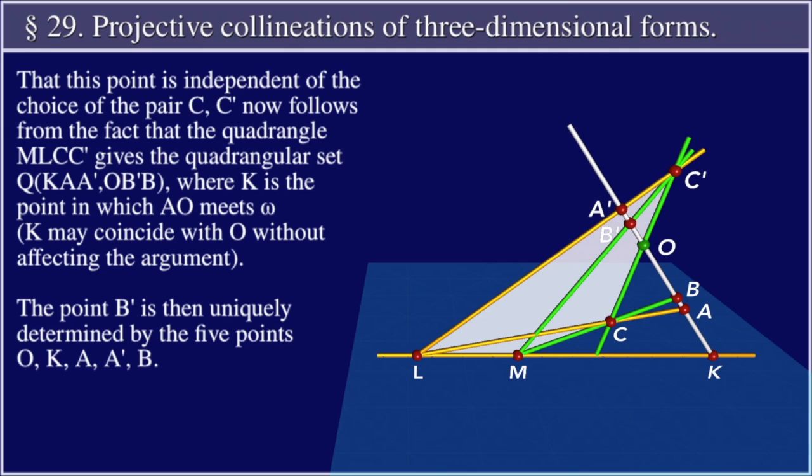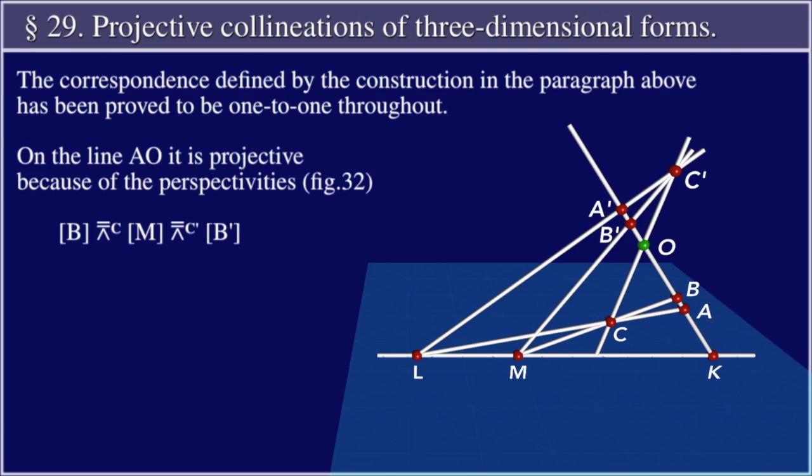The correspondence defined by the construction in the paragraph above has been proved to be one-to-one throughout. The line AO is projective because of the perspectivities, figure 32. Pencil B is perspective with center C to the pencil M, which is perspective with center C prime to the pencil B prime.